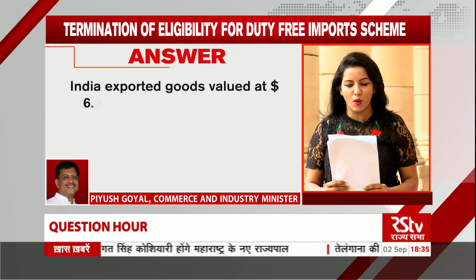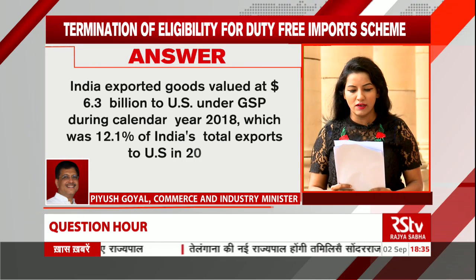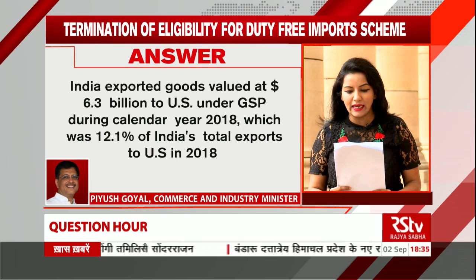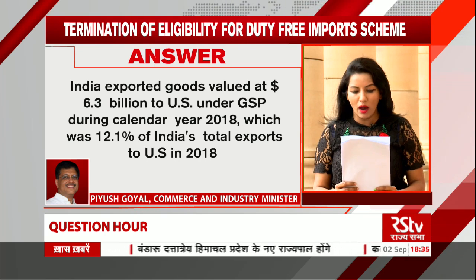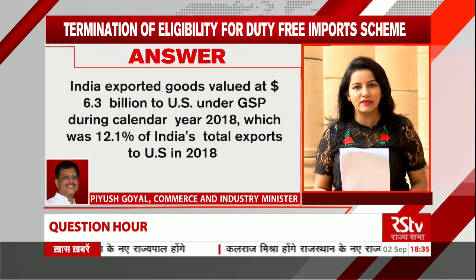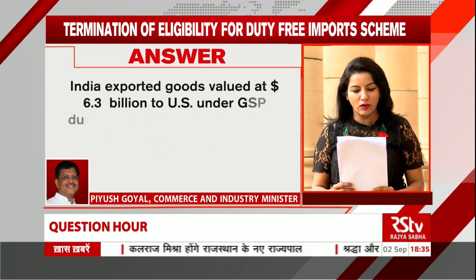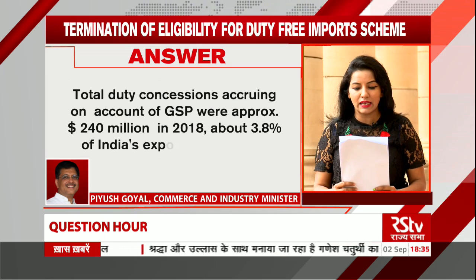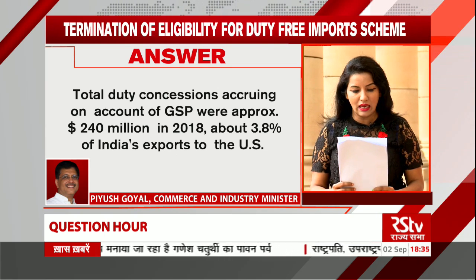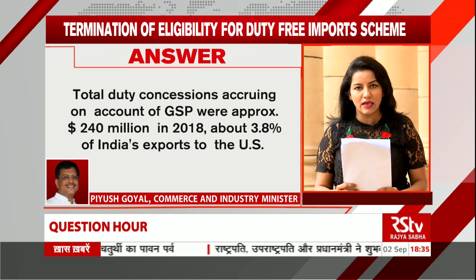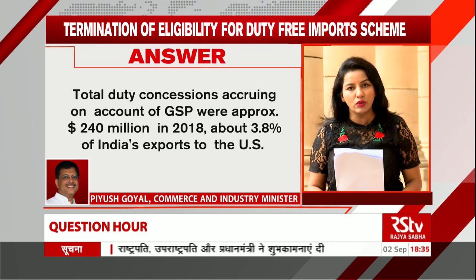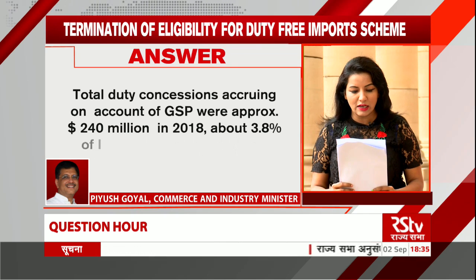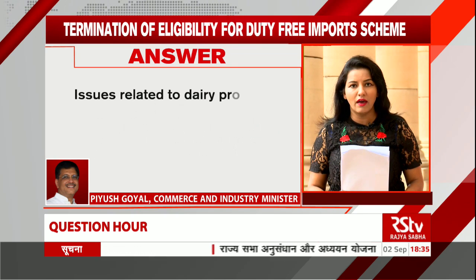The government says that India exported goods valued at $6.3 billion to the US under the GSP program during calendar year 2018, which was 12.1% of India's total exports to the US that year. Total duty concessions on account of GSP were approximately $240 million in 2018, about 3.8% of India's exports to the US availing GSP benefits. These concessions will no longer be available.